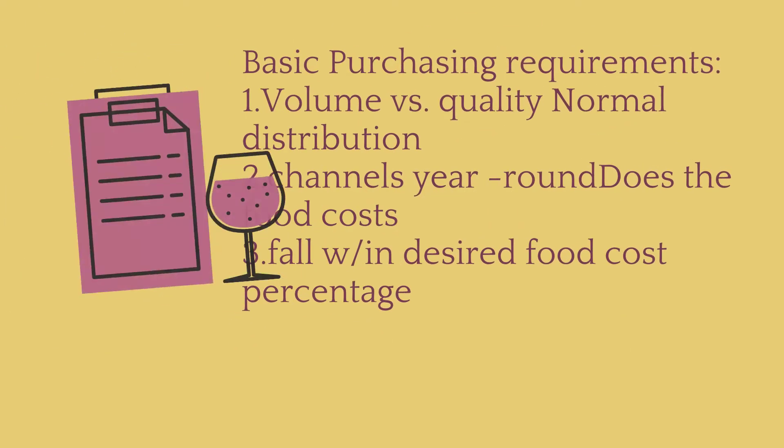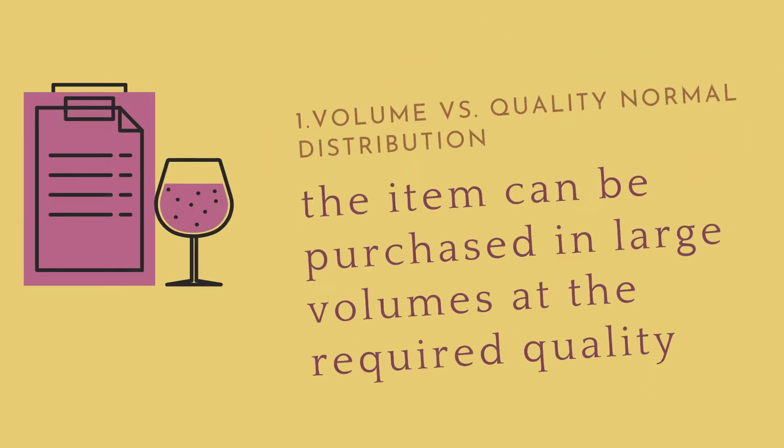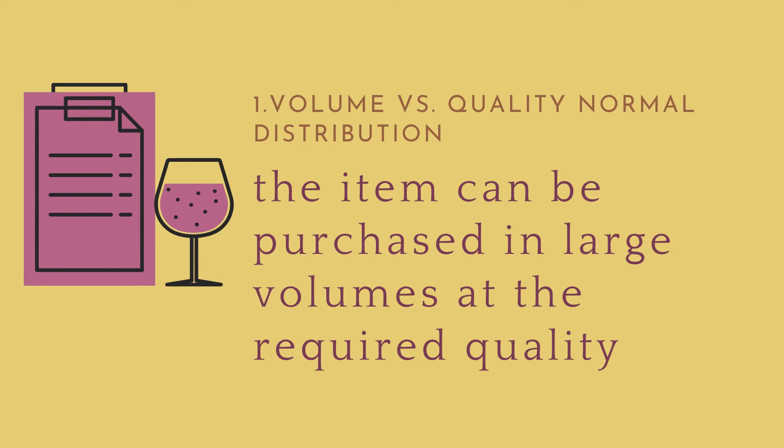Item selection should be chosen according to how well items fulfill three basic purchasing requirements. Number one: items can be purchased in large volumes at the required quality. In menu item selection, you can purchase large volumes of goods — both non-perishable and perishable — at the right quality. Right quality means the suitability of an item for its intended purpose. The purchaser must ensure materials are purchased from authorized or standard brands.